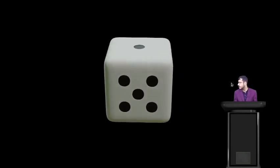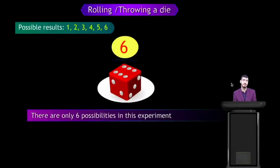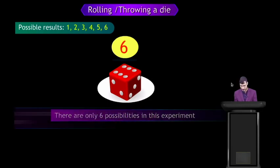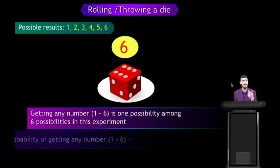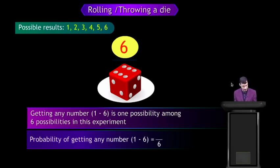Rolling a die — there are 6 possible outcomes: 1, 2, 3, 4, 5, 6. There are only 6 possibilities in this experiment. Getting any number 1 to 6 is 1 possibility among 6, so the probability of getting any number is 1 by 6.